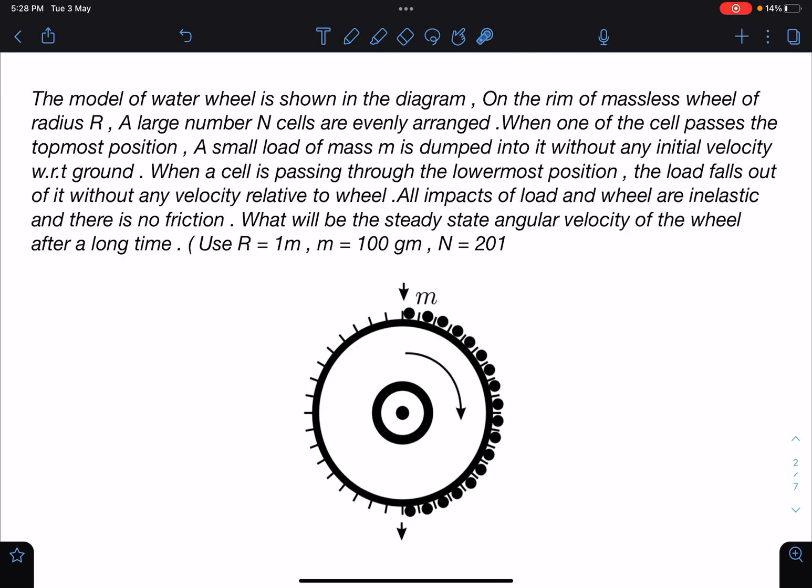When a cell is passing through the lowermost position, the load falls out of it without any velocity relative to the wheel. This is the second statement where we have to pay attention. All impacts of load and wheel are inelastic and there is no friction. What will be the steady state angular velocity of the wheel after a long time? This was the data given in the problem.